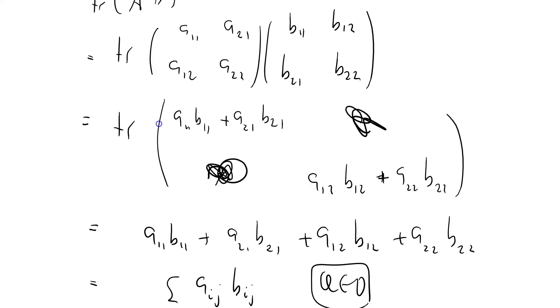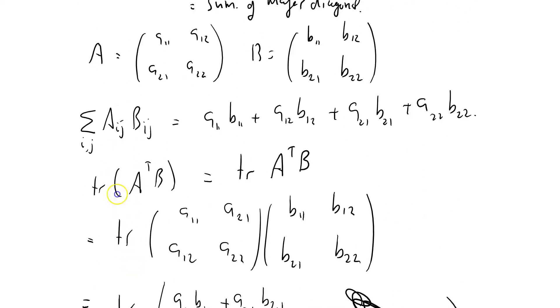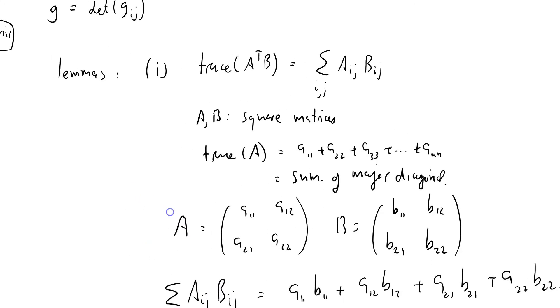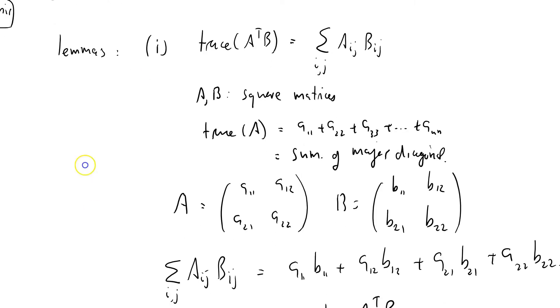Which is equal to A11, B11 plus A21, B21 plus A12, B12 plus A22, B22. Equals the sum over I and J of Aij, Bij, QED. Let's just recap. I'm asserting that the trace of A transpose B equals this thing on the right hand side. And we'll see how useful that is in a minute. Okay. So there's my trace. There's my first lemma.